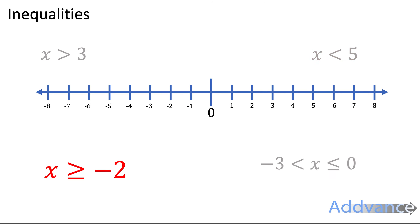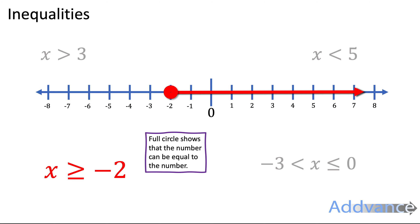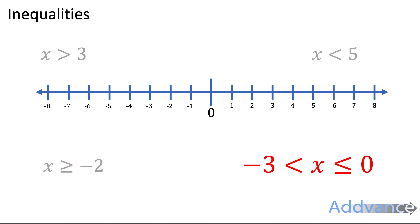x is more than or equal to minus 2 means it could be minus 2, so we draw that as a full circle, and the line goes upwards because it's more than. A full circle as opposed to a ring means it can be equal to that number. For minus 3 is less than x is less than or equal to 0, we draw a line connecting minus 3 and 0 — an open ring at minus 3 because it cannot be equal to minus 3, and a full circle at 0 because it can be equal to 0.